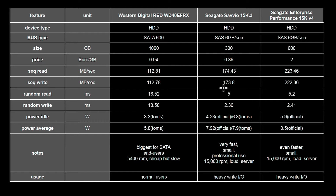You can even pay more if you want. Here's another variant from Seagate, even more powerful than the other drive. Here you get 220 megabytes per second read performance and 222 write performance. Random read and write are in the same ballpark. The price for this one we couldn't get from the internet.